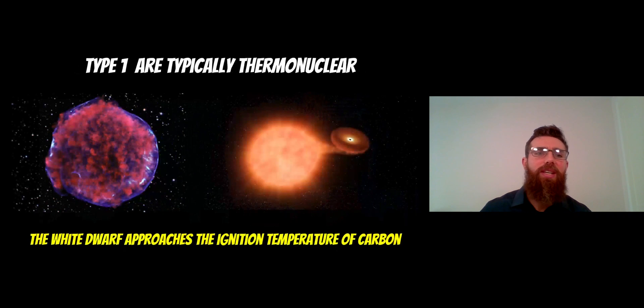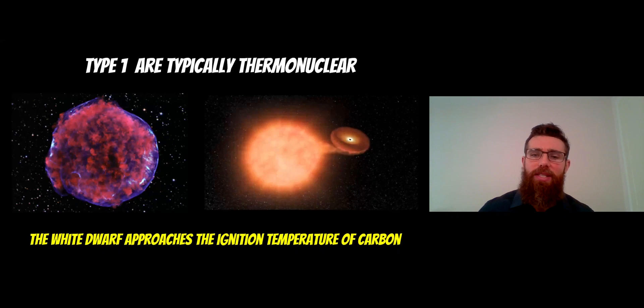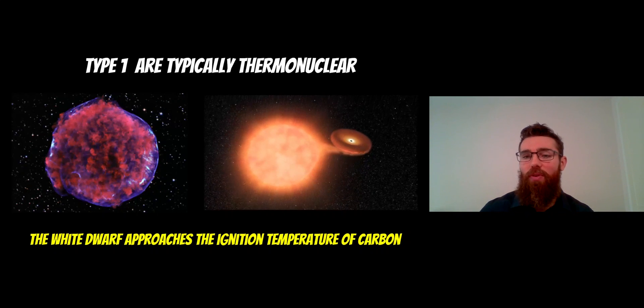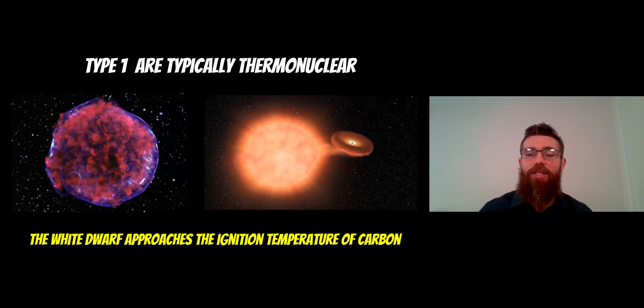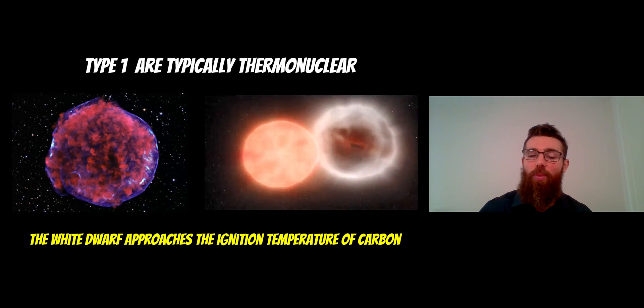Firstly, type 1 are typically thermonuclear, and the example here is a type 1a. On the video you've got a white dwarf on the right hand side pulling material off a red giant. It's a very specific example of a supernova, the type 1a.